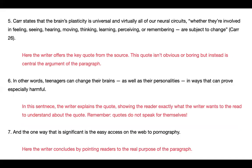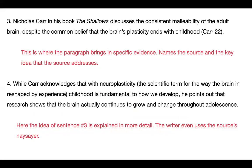Number five: 'Carr states that the brain's plasticity is universal in virtually all of our neural circuits, whether they're involved in feeling, seeing, hearing, moving, thinking, learning, perceiving, or remembering, are subject to change' — and it gives you a citation, Carr 26. Here the writer offers a key quote from the source. This quote is not obvious or boring, but instead is central to the argument of the paragraph. You want to always pick a quote that's really important to your argument, not just really obvious. And notice the period comes after the citation. Also, look back at number three — there's no quote there, but there is a citation. That idea comes from the source but is in the paper writer's own words — the writer paraphrased the original, but it's still the original idea, so that's why it gets a citation. You have to remember to cite paraphrases as well as quotes, and again, the period comes after the citation.